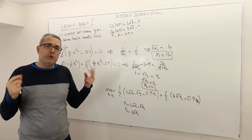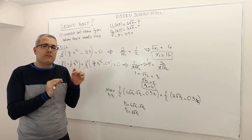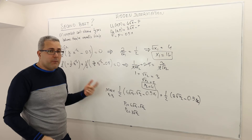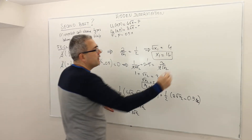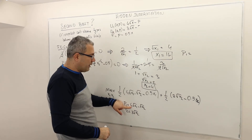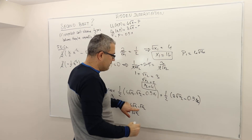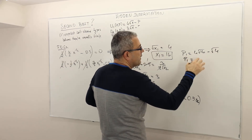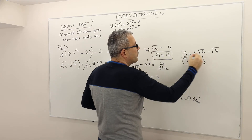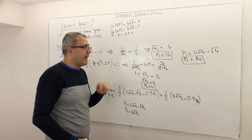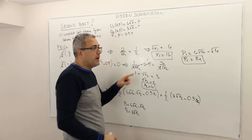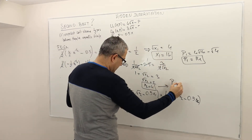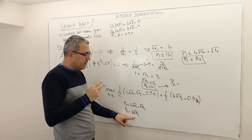So in the two packages, the monopolist offers 16 bottles of water in package 1 and 4 bottles of water in package 2. The price p1 equals 4√16 minus √4 equals 16 minus 2 equals 14. The price p2 equals 3√4 equals 3 times 2 equals 6.